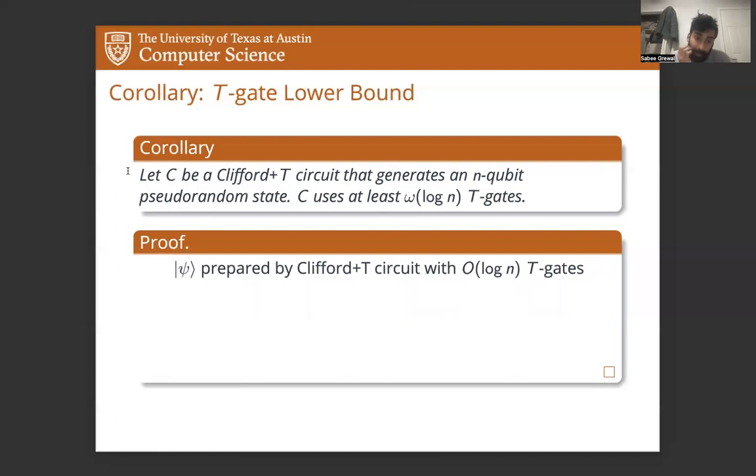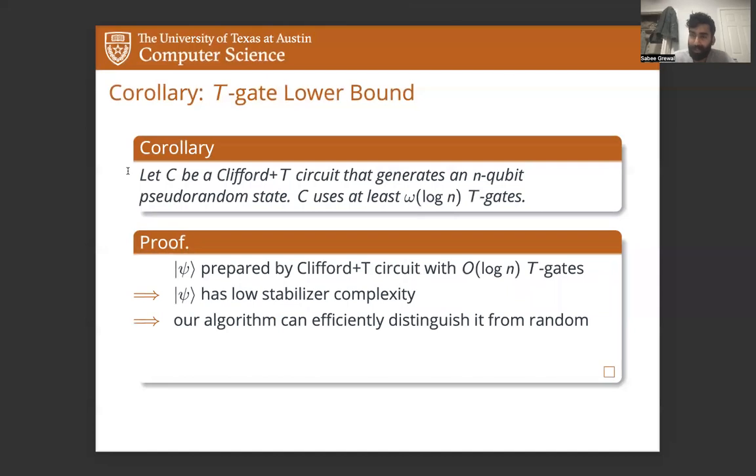So how do we use this to get our corollary that little omega log N T gates are necessary to prepare a pseudorandom quantum state? First, say that psi is prepared by Clifford plus T circuit with order log N T gates. Well, then by the fact we just showed psi has low stabilizer complexity. And therefore the efficient distinguishing algorithm we talked about earlier can distinguish the state from random. And so psi cannot be pseudorandom. And we conclude that little omega log N T gates are necessary.